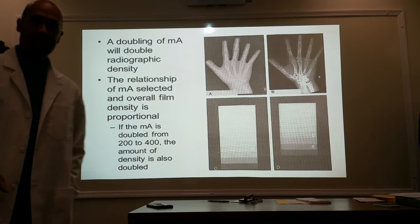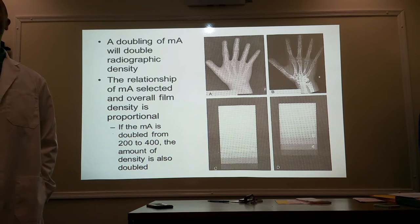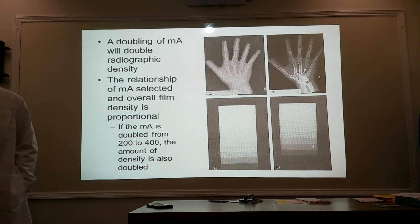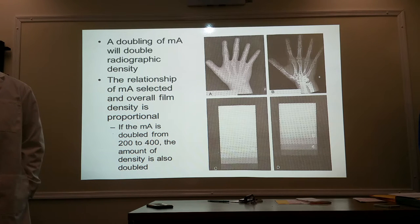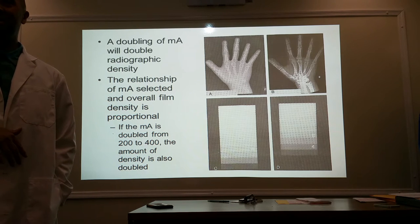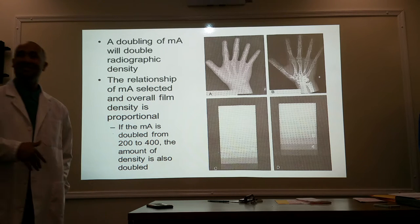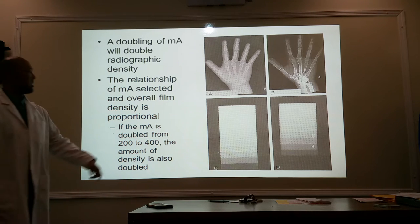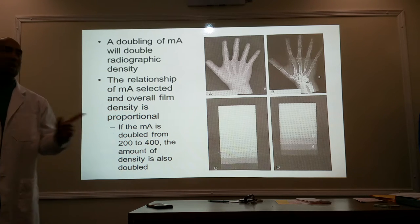Unlike KV, your adjustment in MA is proportional to the density you're trying to produce. So when you double your MA, you're also doubling your overall radiographic density. If I double my MA, it's going to be twice as dark. If I cut my MA by half, it's going to be half the density. The relationship between MAS selected and overall film density is proportional.